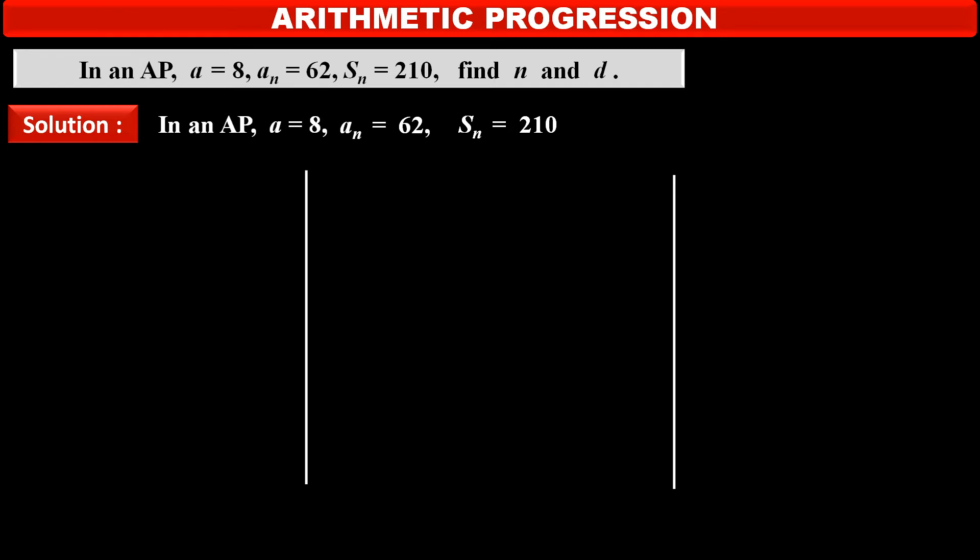By using this information, we have to find N means number of terms of the given AP and D, the common difference.